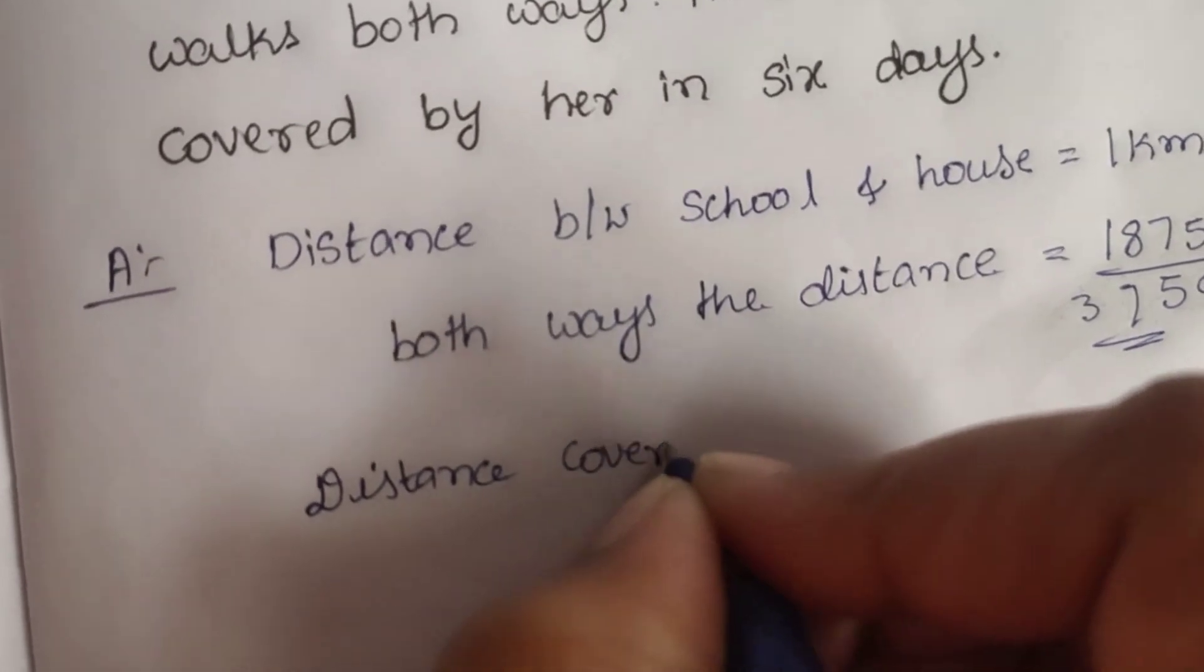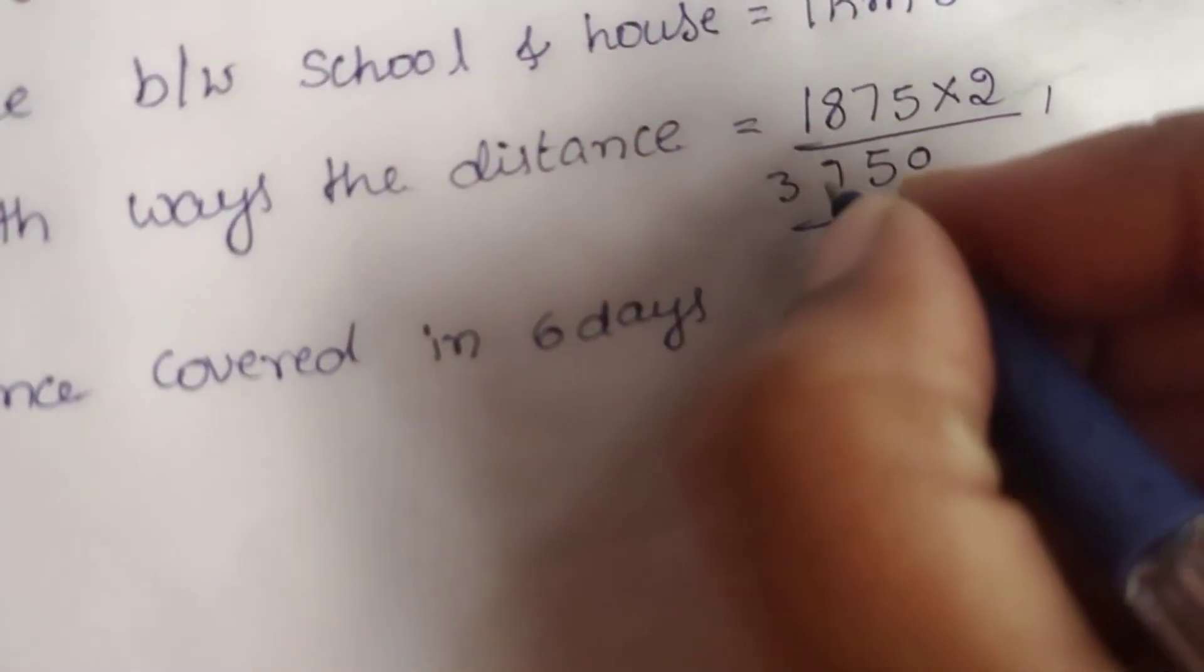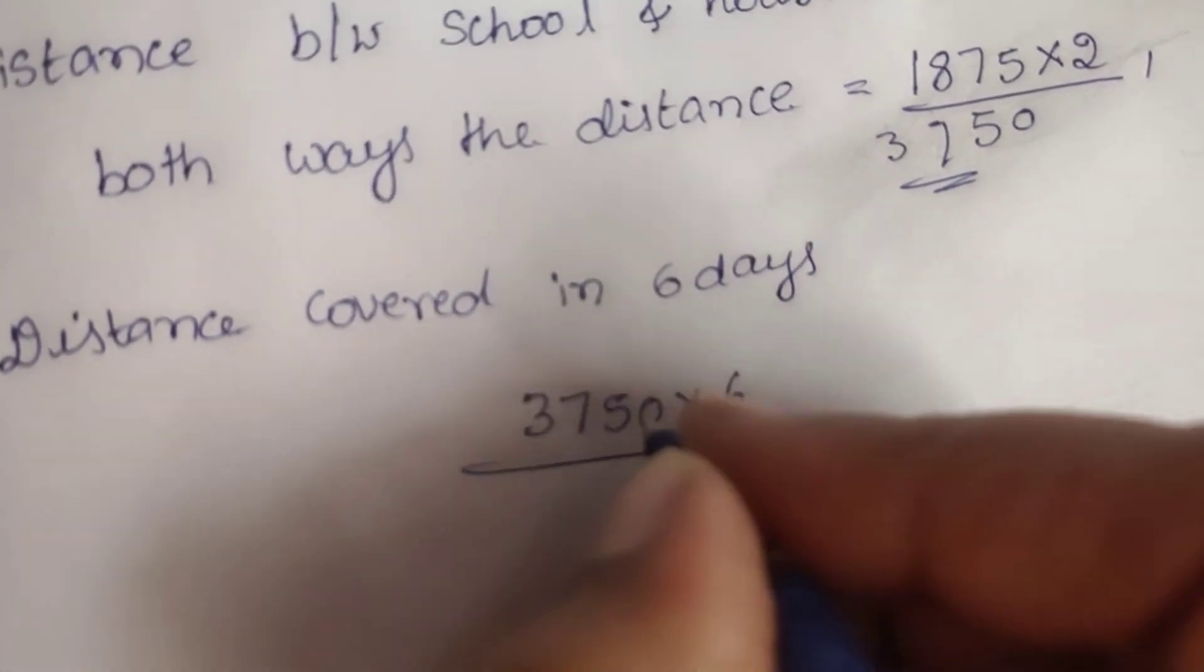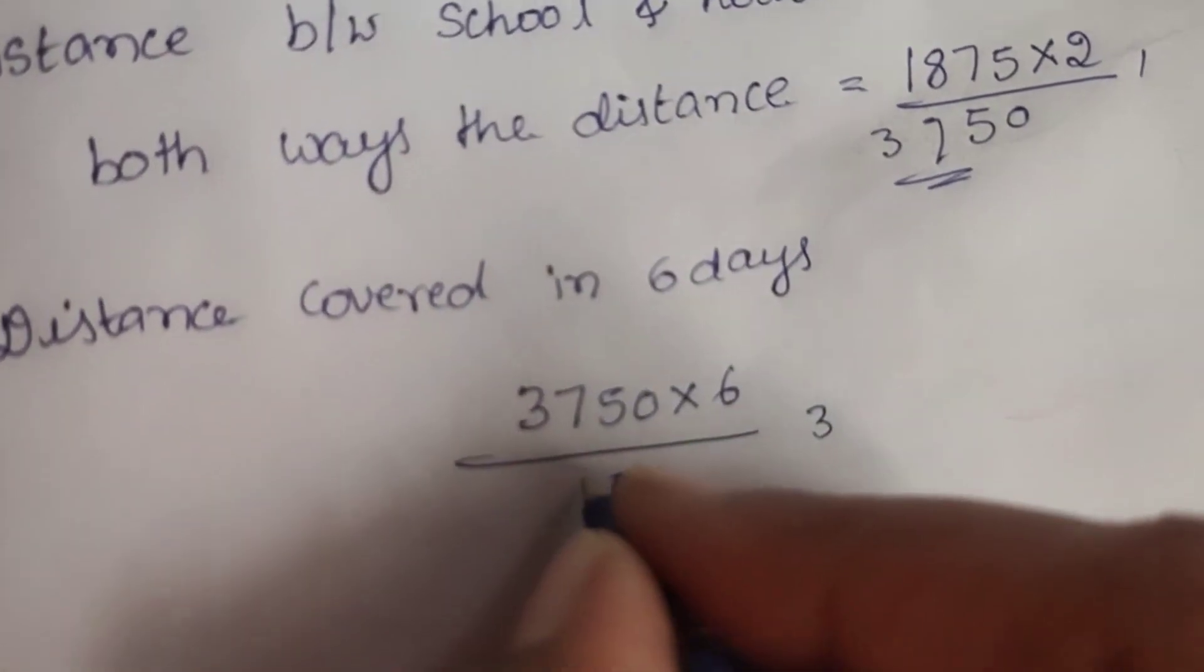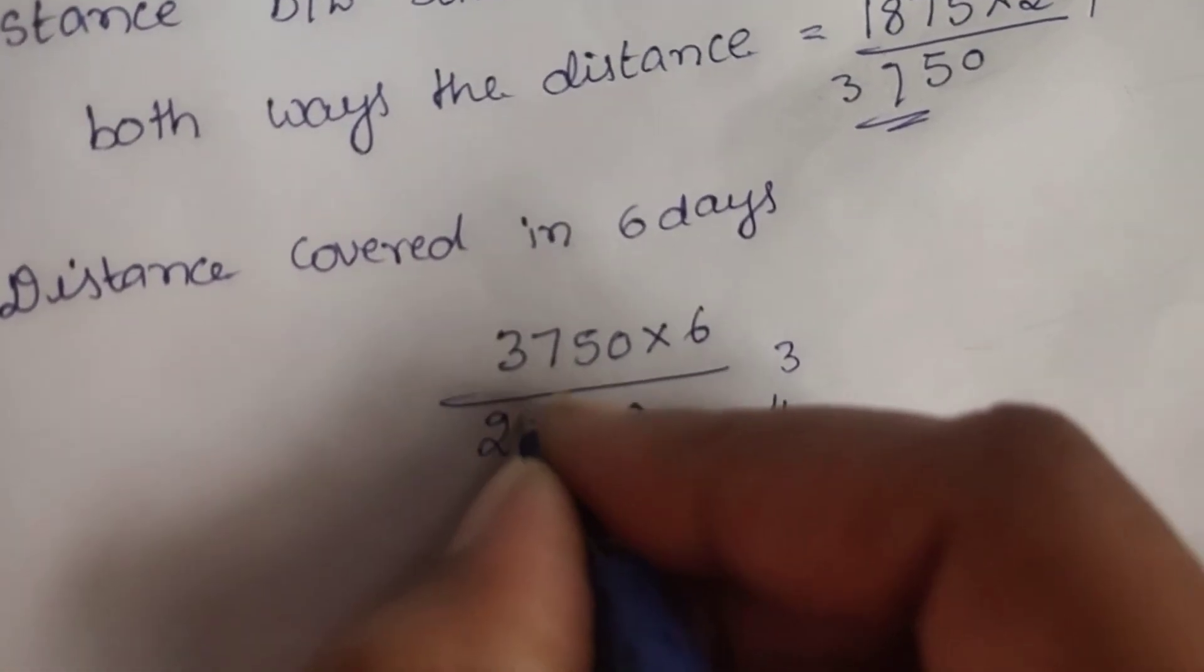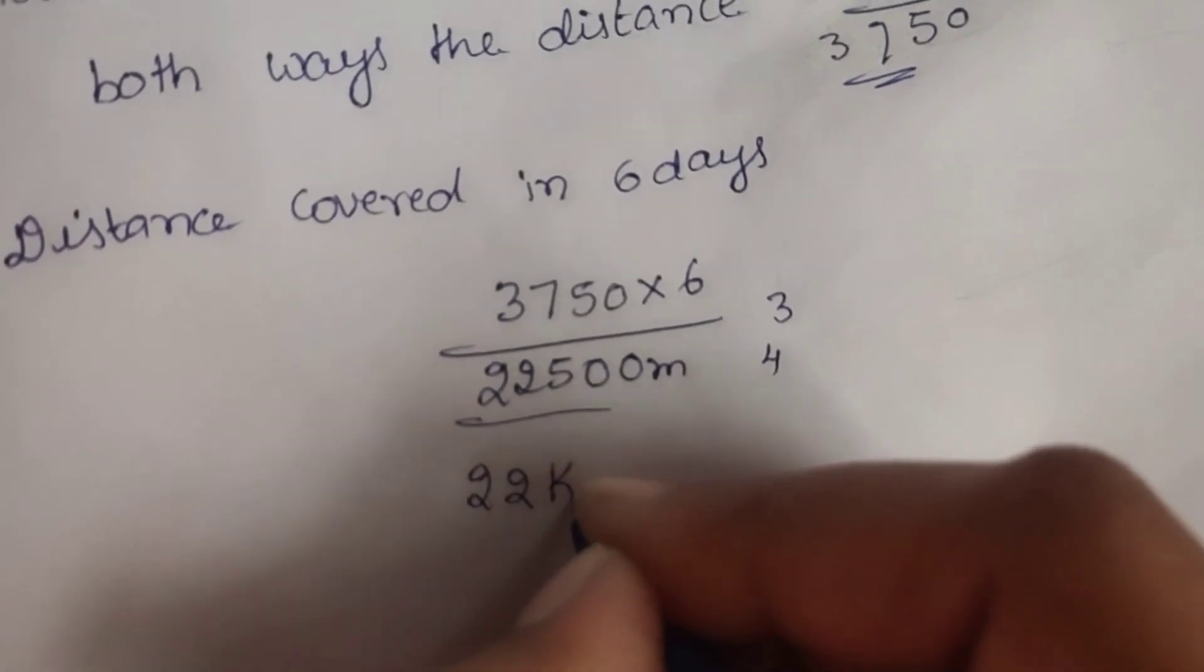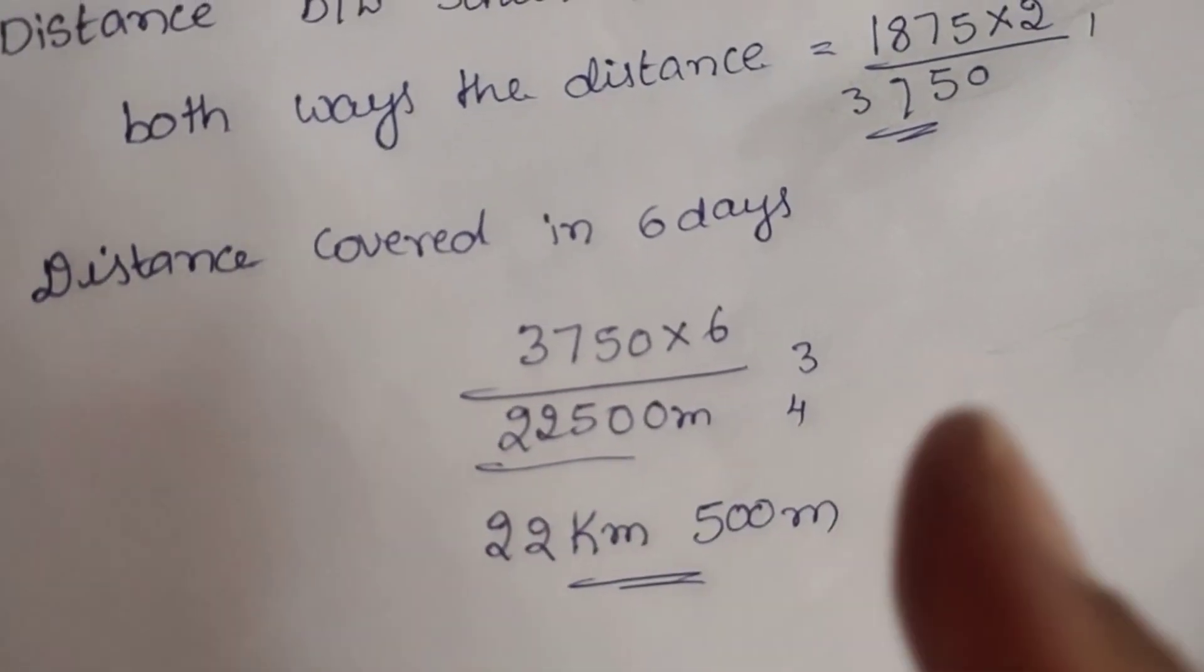So 3,750 meters in one day. Distance covered in 6 days is 3,750 into 6. 6×0 is 0, 6×5 is 30, 0, 3 carry. 6×7 are 42 plus 3 is 45, 4 carry. 6×3 is 18, 18 plus 4 is 22. So 22,500 meters. Converting to kilometers: 22 kilometers 500 meters distance covered by her in 6 days.